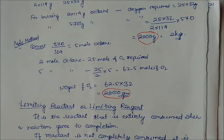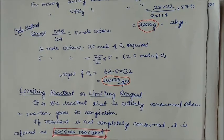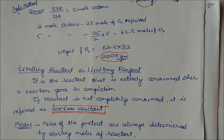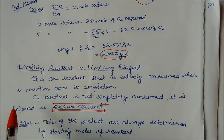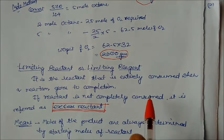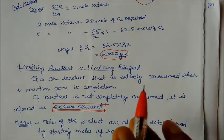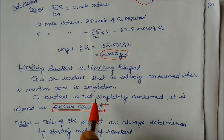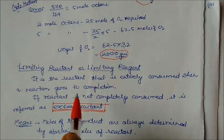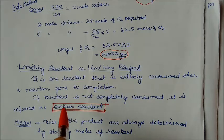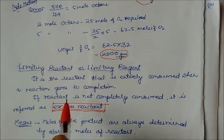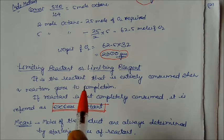Now an important term: limiting reagent. A limiting reagent is a reactant that is entirely consumed when a reaction goes to completion. After the reaction is complete, whatever reactant is left over is not the limiting reagent. The reactant which is totally consumed is called the limiting reagent.